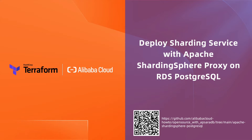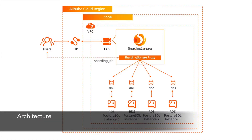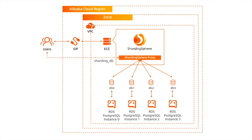Please scan the code to get the full Terraform script for this tutorial. I will show a demo building a sharding service on top of four shards in four RDS PostgreSQL database instances. Each RDS PostgreSQL instance has one shard.